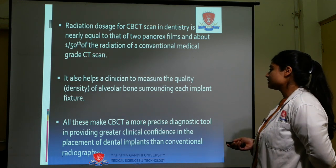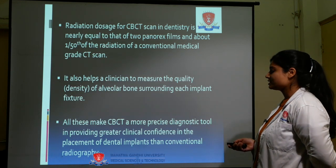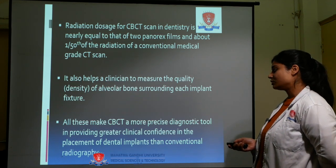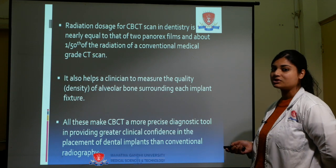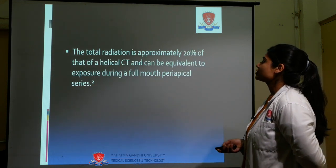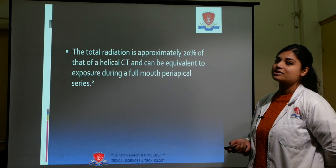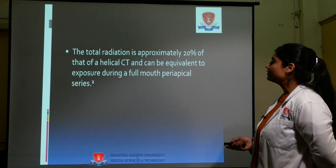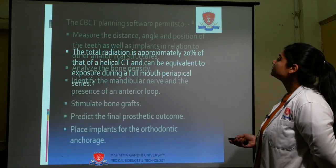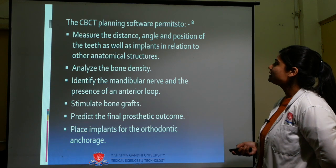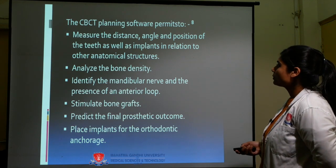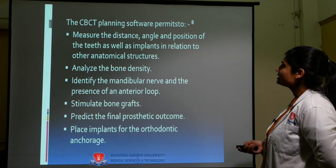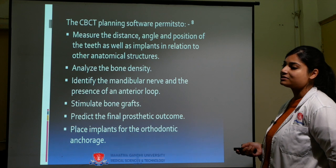All these make CBCT a more precise diagnostic tool, providing greater clinical confidence in the placement of dental implants than conventional radiography. The total radiation is approximately 20% of that of a helical CT and can be equivalent to exposure during a full mouth periapical series. CBCT planning software measures the distance, angle, and position of the teeth as well as implants in relation to other anatomical structures.